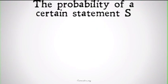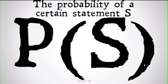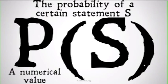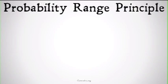We're going to introduce a notation that we'll use throughout this series: the probability of a certain statement S is going to be written as P(S). What that's going to come out as is not a true or false like most of our logical functions, but a numeric value. There are going to be some parameters on that value, which we'll cover in the next couple of rules.